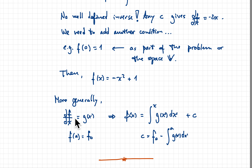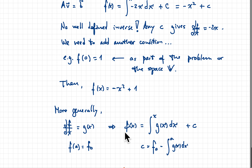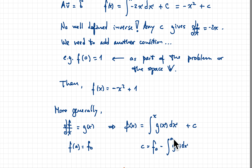More generally, given df/dx = g(x) for any function g, the solution is f(x) equals the integral of g plus a constant. Implementing the boundary condition that f evaluated at point a equals f0, the constant is f0 minus the antiderivative evaluated at a. The final result is f(x) equals the integral from a to x of g(x') dx' plus f0. When you evaluate x at a, the integral vanishes and you recover f(0) = f0 as required.